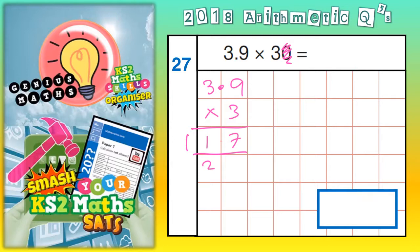Put your decimal point in, that's 11.7. 11.7 is the answer to 3.9 times 3.